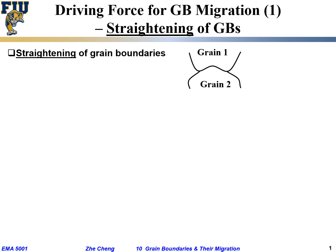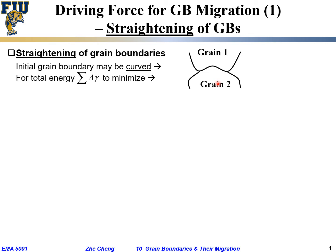The first mechanism I would call the straightening of the grain boundary. What does that mean? I have this initial grain boundary between two grains — it's not a straight boundary. Straightening means an initially curved, tortuous grain boundary has a tendency to become straightened. The initial total grain boundary energy wants to get minimized, get reduced. So I initially start with a tortuous grain boundary in order to minimize it.